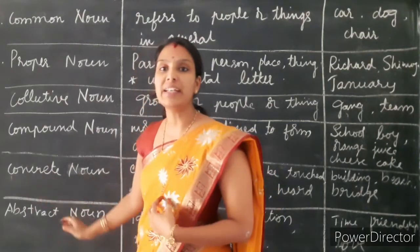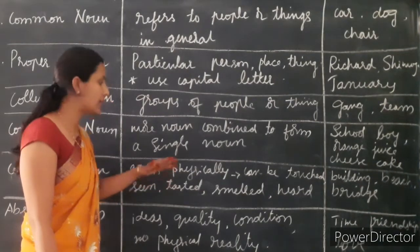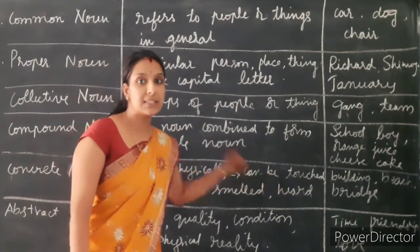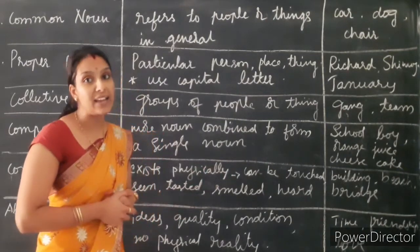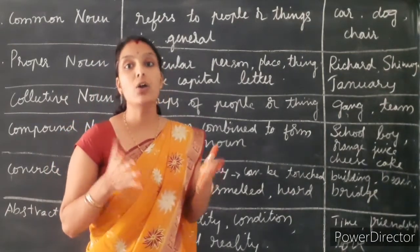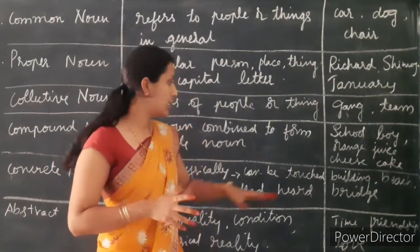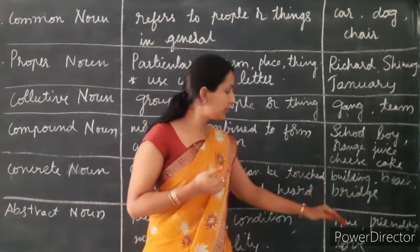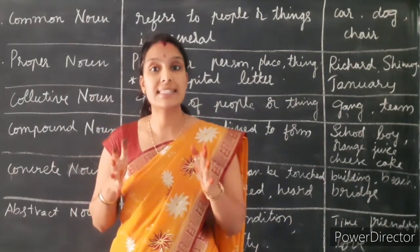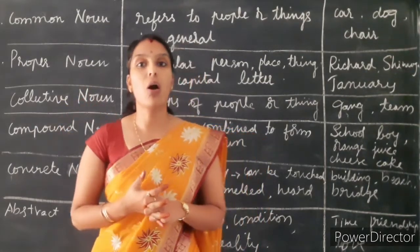Next one is concrete noun. The noun which has physical existence — that can be touched, can be smelled, can be heard, can be sensed, can be tasted — these kinds of nouns are called concrete noun. For example, school, building, beach, bridge, etc. These are nouns which have their own existence, which can be touched and sensed. So these kinds of nouns are called concrete noun.